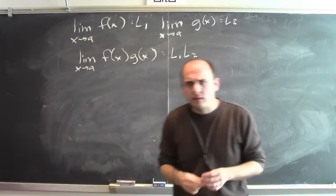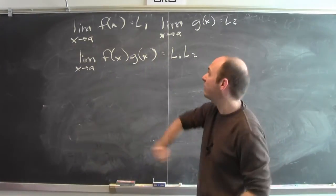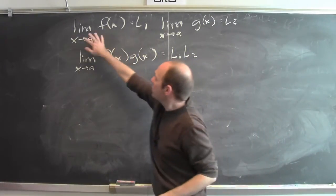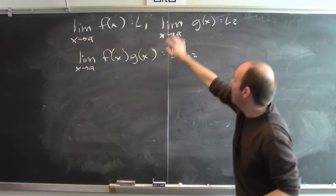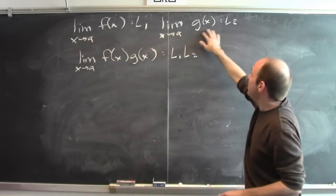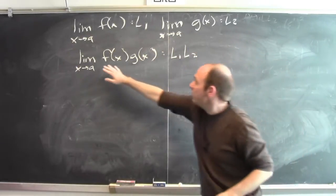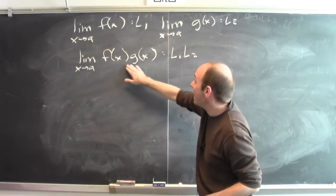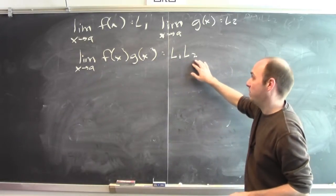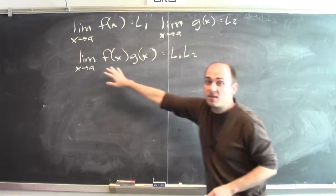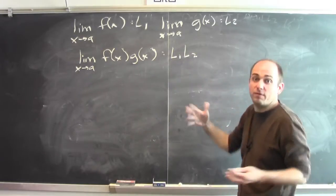I'm going to convince you that the limit of a product is the product of the limits. Specifically, I'm going to show that if the limit of f(x) as x approaches a equals l1, and the limit of g(x) as x approaches a equals l2, then the limit of f(x)·g(x) as x approaches a is l1·l2 — provided those limits exist.